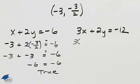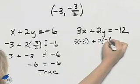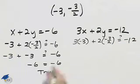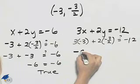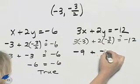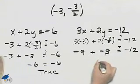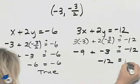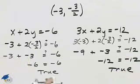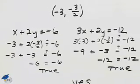Substituting into the other equation, we have three times negative three plus two times negative three halves. We want to see if that equals negative twelve. Three times negative three is negative nine, and the two's cancel giving plus negative three. Negative nine plus negative three is negative twelve, which does equal negative twelve — that is true. Because we obtained two true statements, this point does satisfy the system.